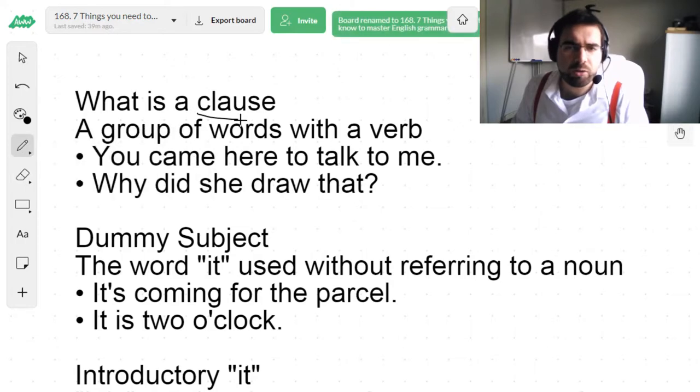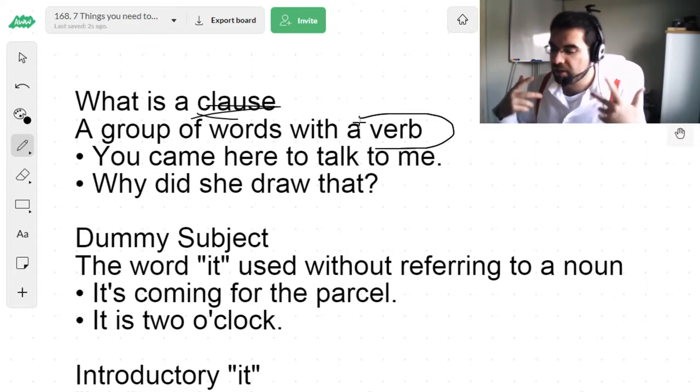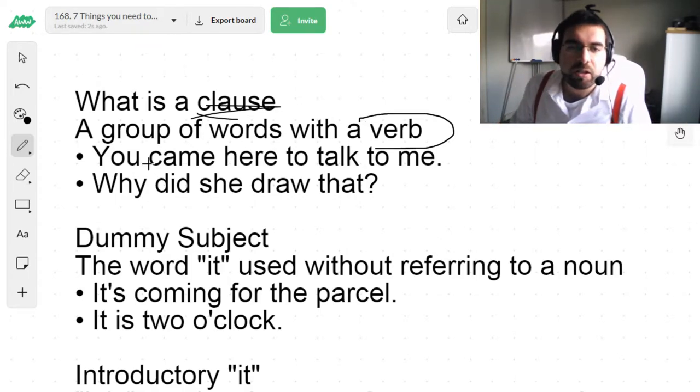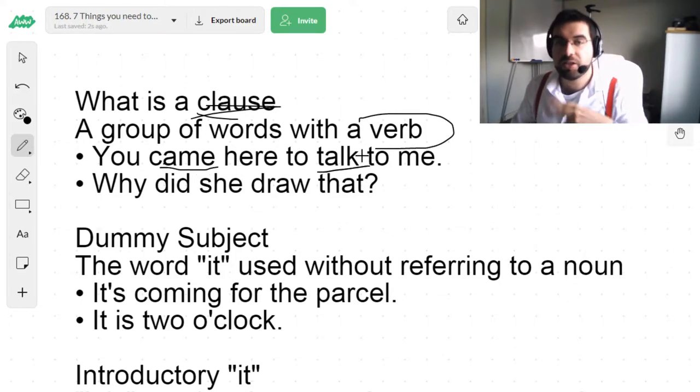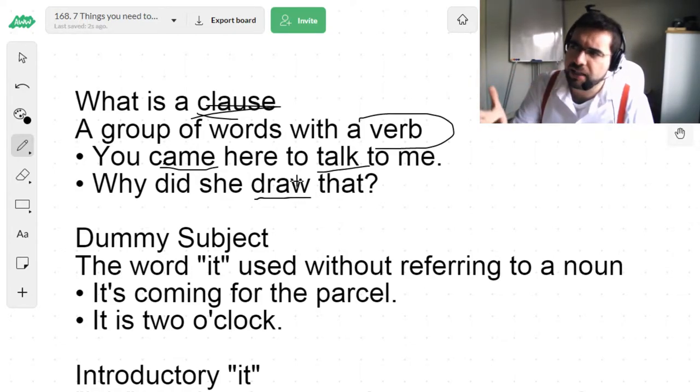So, number one, a clause. You've got to understand what a clause is. A group of words with a verb. Object, subject, verb, quite important. You came here to talk to me. Why did she draw that? Why did he say that? Clause.